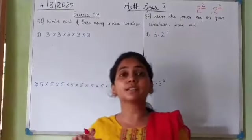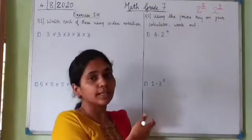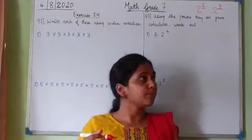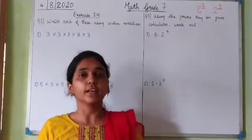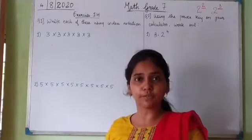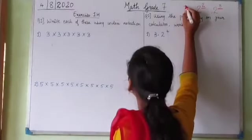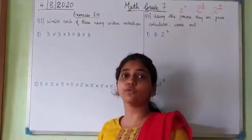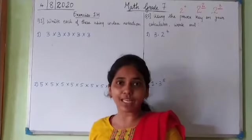But if a number is raised to a power greater than 3 — greater than cube — then we won't say it is a square or a cube. We call it just the power of the given number. The power can be anything: 2 raised to 4, 2 raised to 10, or 2 raised to 100.